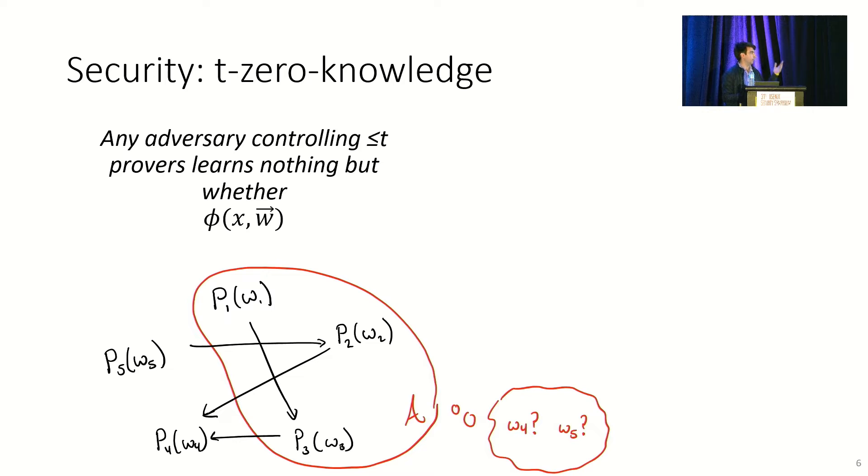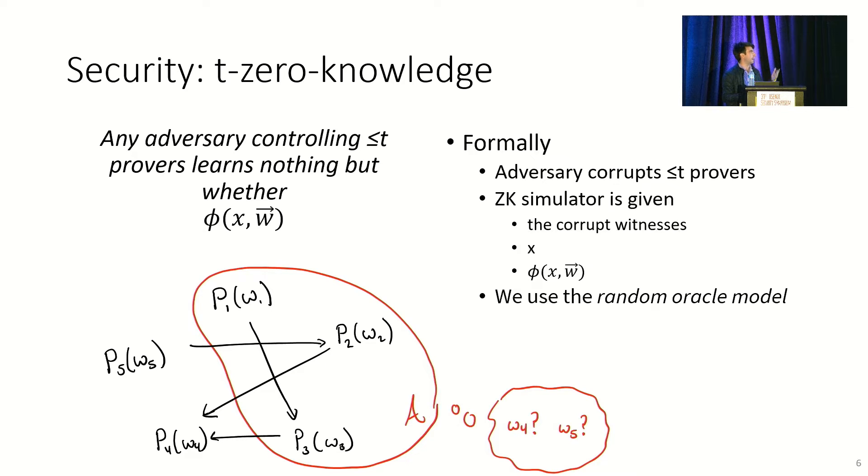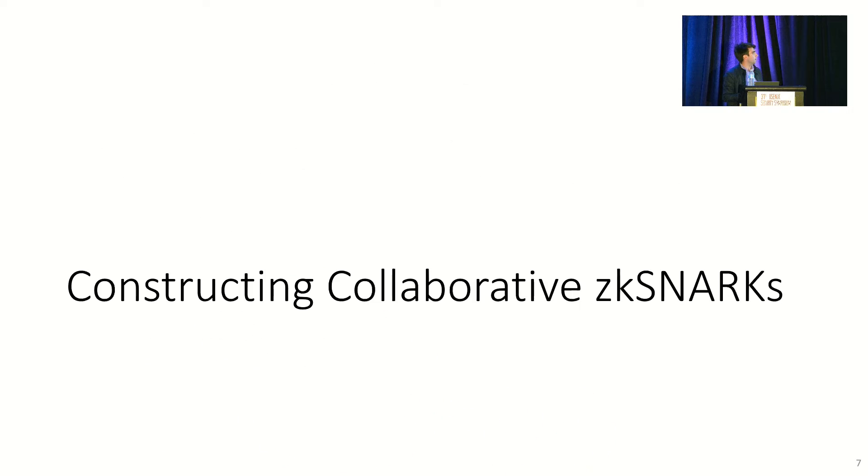It's impossible to avoid leaking validity because the whole point here is to prove validity. In the paper, we formalize this in the style of a simulation definition. We imagine what an adversary would see and require that that adversary's view be simulatable given only the corrupt witnesses, the public data, and the validity bit. So this is one of our security definitions. There are, of course, more in the paper.